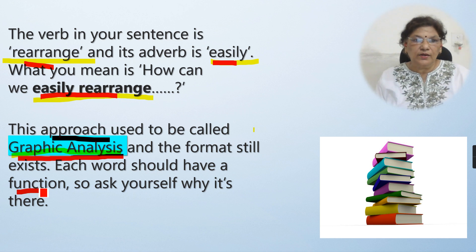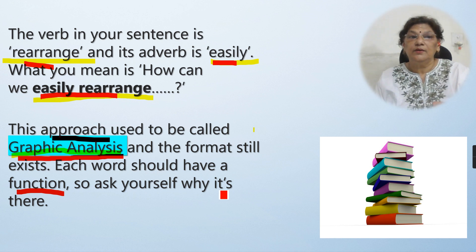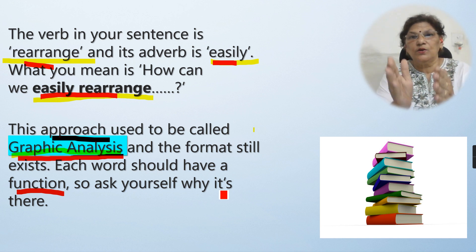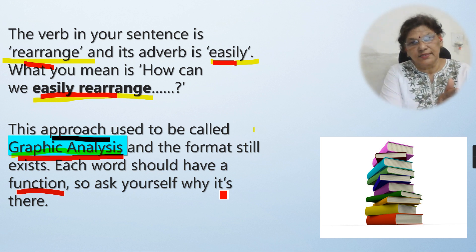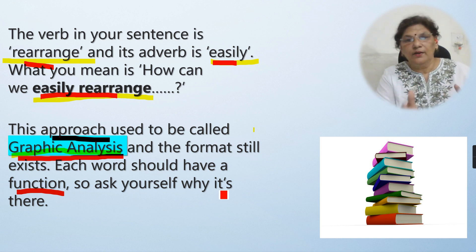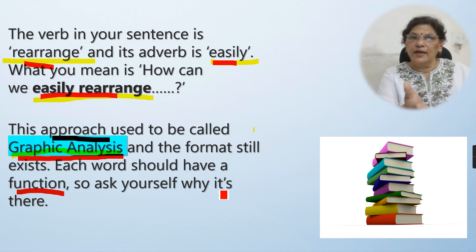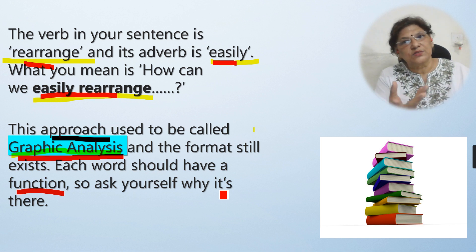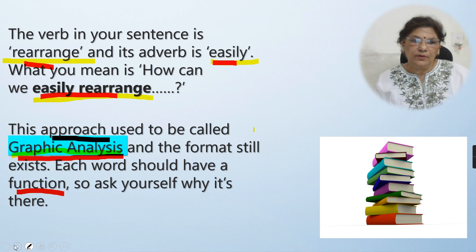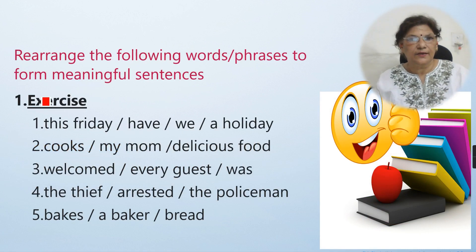Each word has a function. So ask yourself: why is the word there? Ye jab aapko understand karlengo ki this word is there because it has this function in the sentence — it is working as a noun, it is working as a subject, or this word is working as a verb, and this word or group of words is working as object — then your concept will be clear. Toh aapko attempt karna easy ho jaayega.